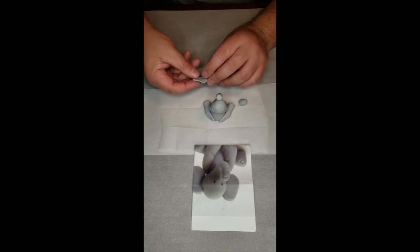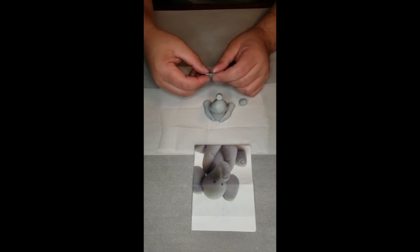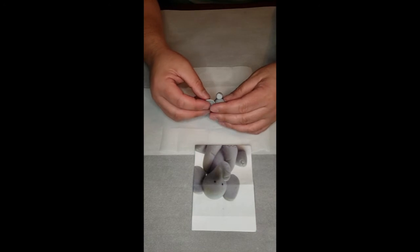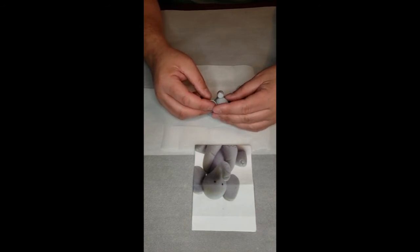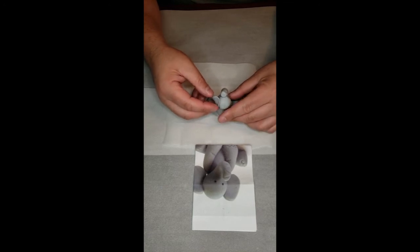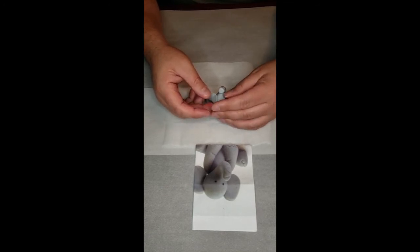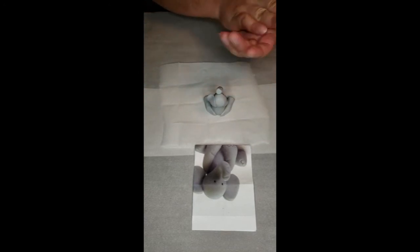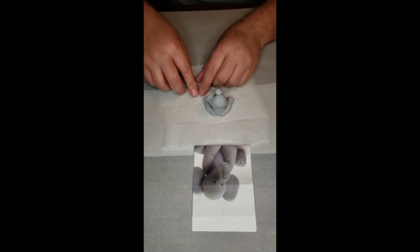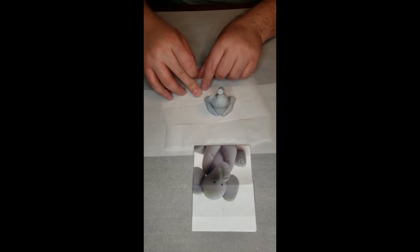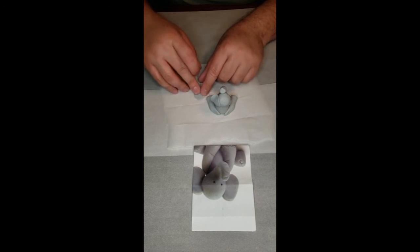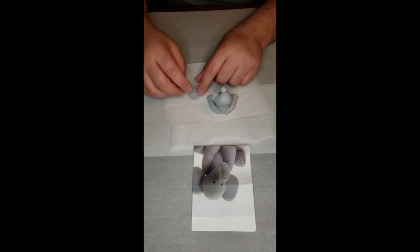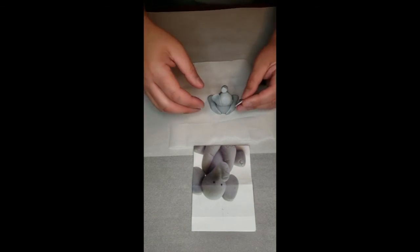So one end will be a little thicker, the other one will be slightly thinner. And I will glue the ear on one side. And we will do it for the other side. And then we will glue it on the other side.